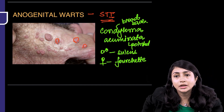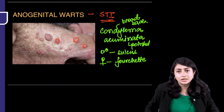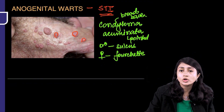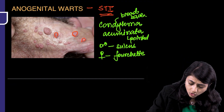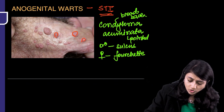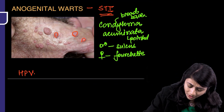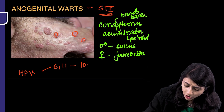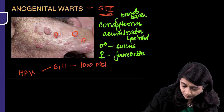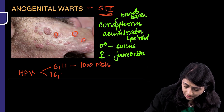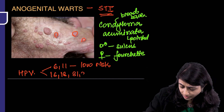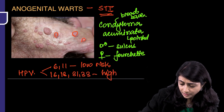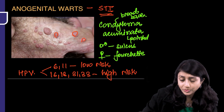They are softer than warts seen on normal skin. Anogenital warts are caused by two subclasses of HPV. HPV 6 and 11 are low-risk types. HPV 16, 18, 31, and 33 are high-risk types of HPV.